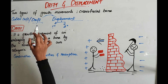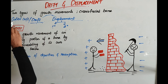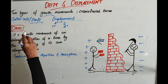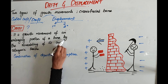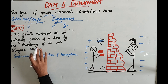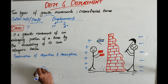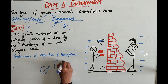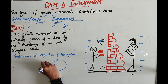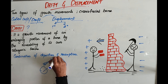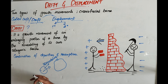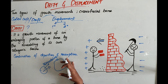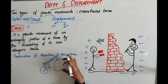Coming to drift. Drift is also called cortical drift. Drift is a growth movement of an enlarging portion of a bone by the remodeling of its own osteogenic tissues. Imagine this as an enlarging portion of a bone — a part of a bone. This bone will undergo enlargement to a larger size by remodeling. The bone itself will undergo remodeling and due to remodeling of its own tissues, there will be enlargement of the bone — a growth movement — that is called drift.